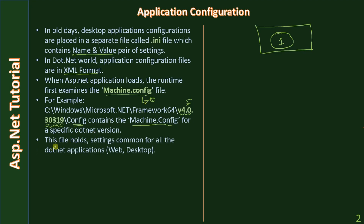The runtime then moves to the next level of settings. The machine.config file holds settings common for all .NET applications — whether it is a web application or a desktop application. The settings are common for the specific machine, which can be your web server machine or your standalone machine.